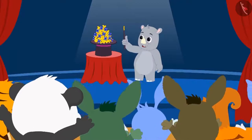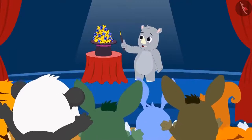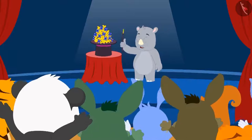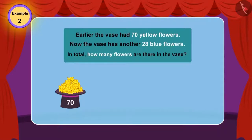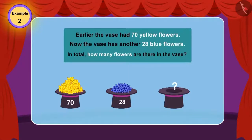They clapped really, really hard. In the flower vase earlier, there were 70 yellow flowers. Now, in the flower vase, there are 28 flowers more. Now, how many total flowers are there in the vase?